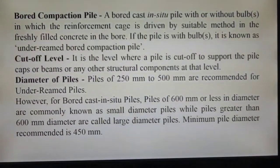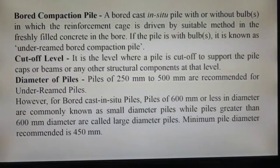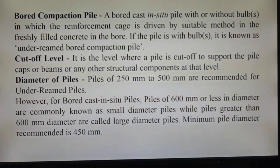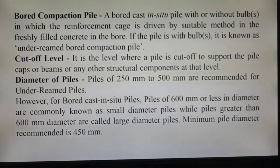Regarding pile diameters, under-reamed piles range from 250 mm to 500 mm — that is 300 mm, 375 mm, 400 mm, 450 mm, and 500 mm. The latest code for bored cast in-situ piles defines piles of 600 mm or less in diameter as small diameter piles, while piles greater than 600 mm diameter are called large diameter piles. The minimum pile diameter recommended is 450 mm in these cases. In future lectures I will be referring to the Indian Standard code numbers, years, and their latest reaffirmed years.